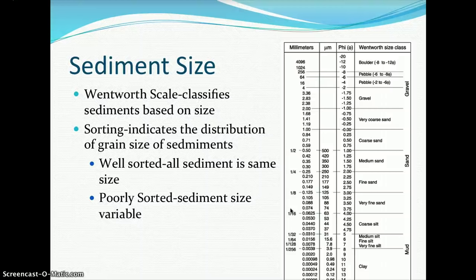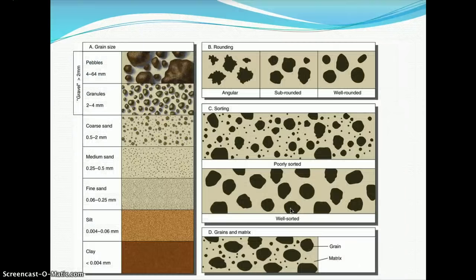The Wentworth scale classifies sediments based on size. Sorting indicates the distribution of grain sizes. A well-sorted beach is when all the sediment is the same size — very typical of the New Jersey coastline's sandy beaches. A poorly sorted beach, like in New England, has rocks, pebbles, and sand mixed together, so the sediment size is very variable.